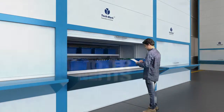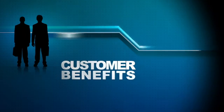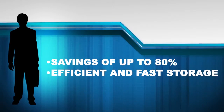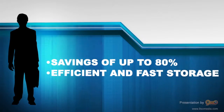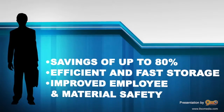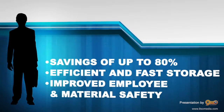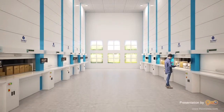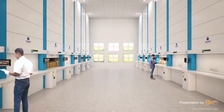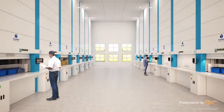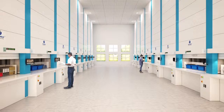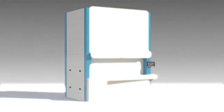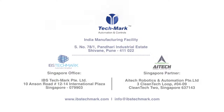So, how do customers benefit? Space savings of up to 80% and related cost savings. Efficient and fast storage and retrieval at the click of a mouse. Improved employee and material safety due to ergonomic design. Automated storage solutions from Techmark Automation and Controls — India's leading automation solutions company. Now store away all your storage problems with automated storage systems from Techmark Automation and Controls.